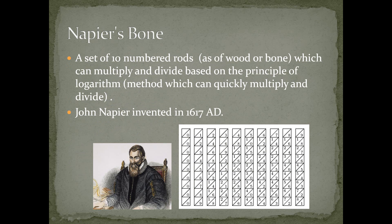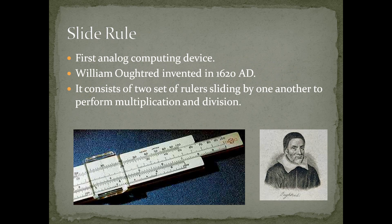Napier's bones is a set of 10 numbered rods. Each rod is made up of wood or bone, which can multiply and divide based on the principle of logarithm. Logarithm is a method which can quickly multiply and divide. Napier invented it in 1617 A.D.